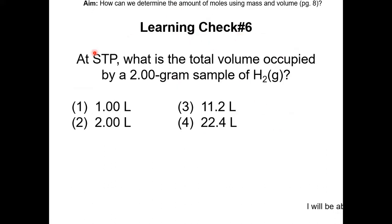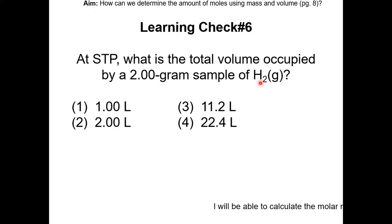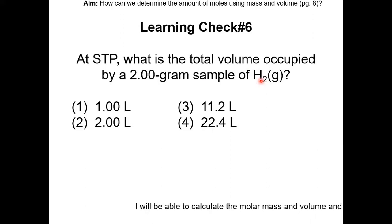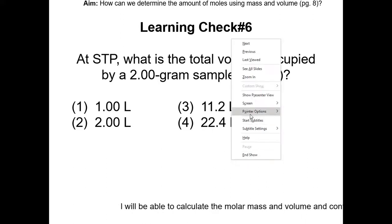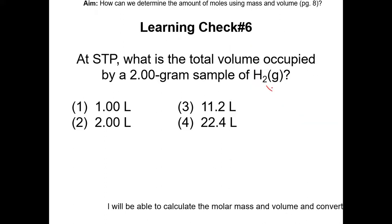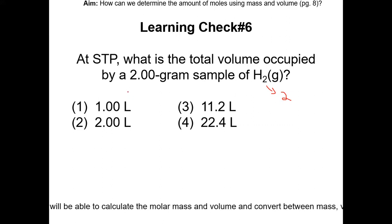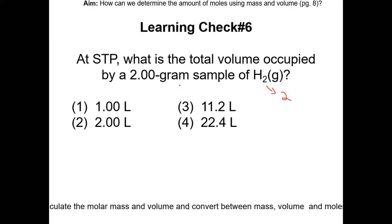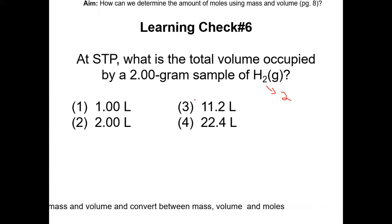Learning check number 6: at STP, what is the total volume occupied by a 2g sample of H2 gas? Pause the video and resume once completed. The first step is to determine the GFM of H2, which is 2. Since we have 2g of H2, that is 1 mole of H2, and 1 mole at STP occupies 22.4 liters. The answer is choice 4.